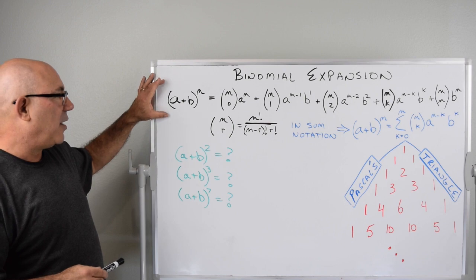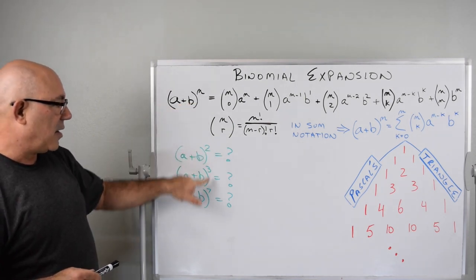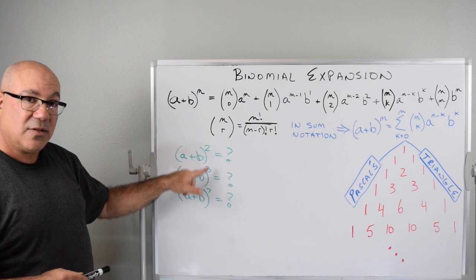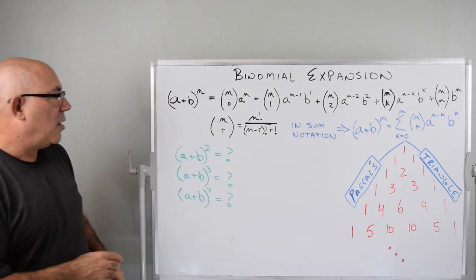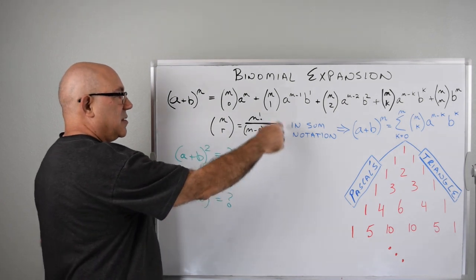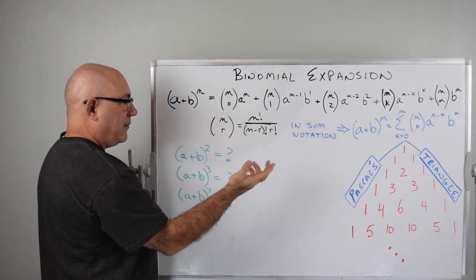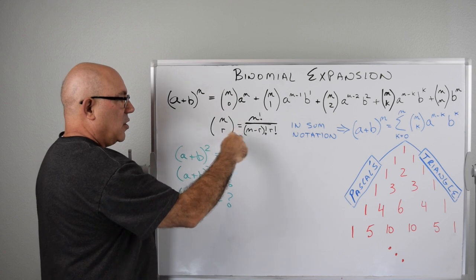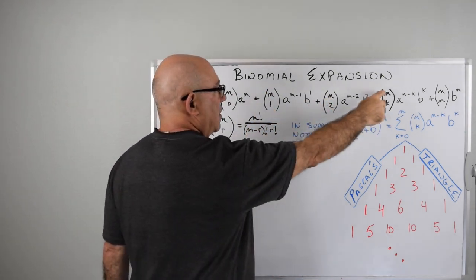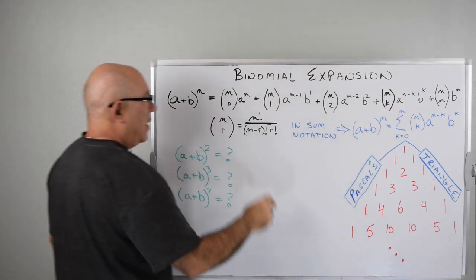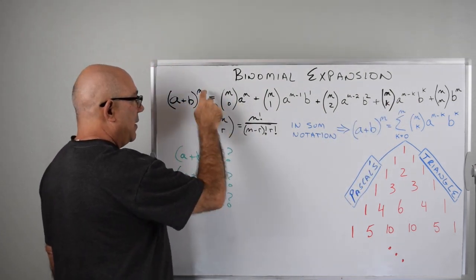For the binomial expansion, when we have A plus B to the N — in our case N is 2, 3, and 7 — we're going to use the combinations formula. So N things taken 0 at a time, N things taken 1 at a time, N things taken 2 at a time, all the way up to K. And as you see, the A coefficient starts at the top and goes down.